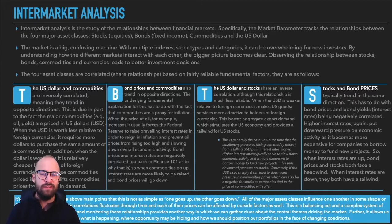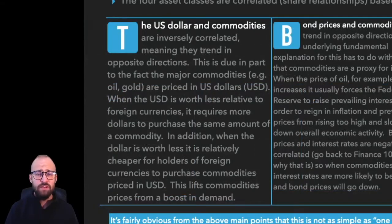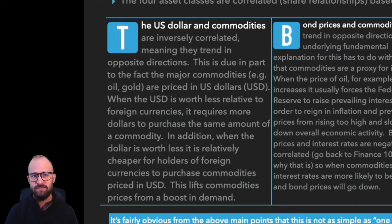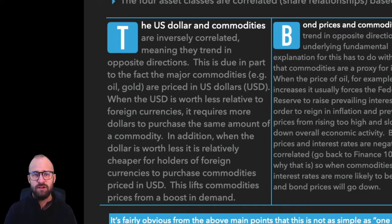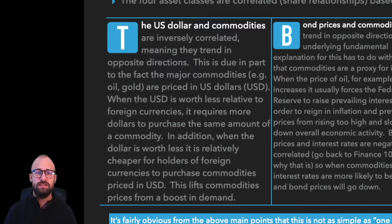First up, let's talk about one of the strongest, most reliable relationships — that of the U.S. dollar and commodities. The U.S. dollar and commodities share a historically inverse correlation, meaning they tend to trend in opposite directions of each other. This has to do with some fundamental factors, the most influential of which is that most commodities are priced in U.S. dollars. So when the dollar weakens and is worth less relative to other currencies, it ends up requiring more U.S. dollars to purchase those commodities, which boosts their price.